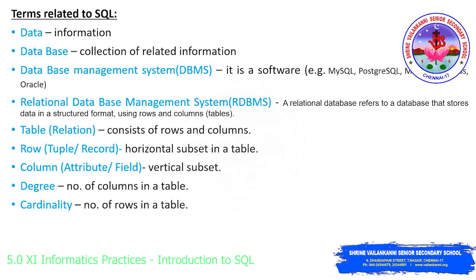Degree: the number of columns in a table. For example, if you have 5 columns in a table and I ask what is the degree, your answer will be 5. Similarly, cardinality represents the number of rows in a table — how many rows there are represents the cardinality.